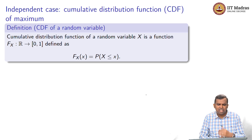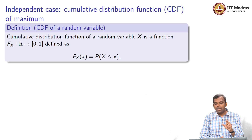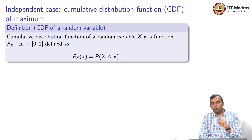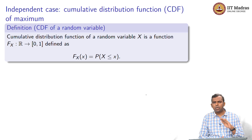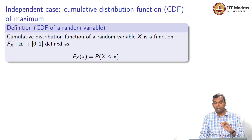What is the CDF? The cumulative distribution function of a random variable is a function from the real line to [0,1], defined as simply the probability that the random variable is less than or equal to x. For PMF, it is the probability that X equals small x. For CDF, it is the probability that X is less than or equal to small x. It turns out CDF is very important — it is much more general than the PMF.